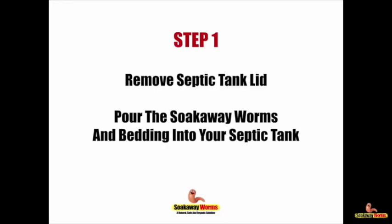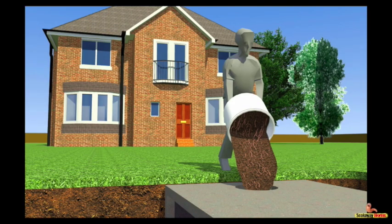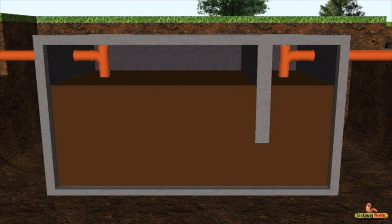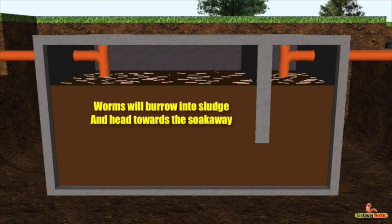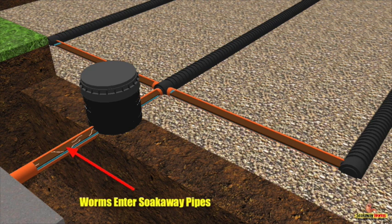Soak away worms are very easy to install. Step one: remove the septic tank lid and pour the worms and bedding into your septic tank or the nearest manhole chamber. Once the worms are in the septic tank, they will start to breed and multiply, burrowing into the sludge and making their way slowly towards the soak away via the outlet pipe. The worms will continue to burrow and work their way through the sludge in those soak away pipes.